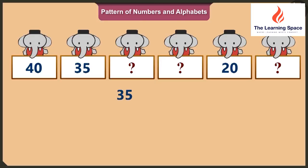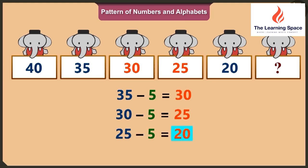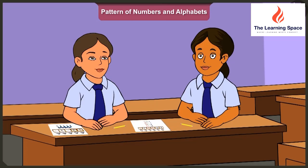On subtracting five from thirty-five, we will get thirty. And on subtracting five from thirty, we will get twenty-five. Yes. And on subtracting five from twenty-five, we get twenty. And on subtracting five from twenty, we get fifteen. Now let's go.